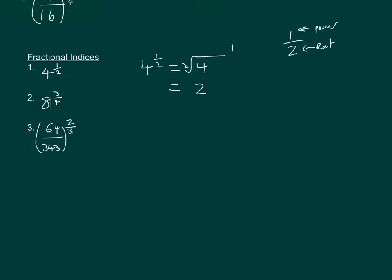To see how this works: if we take 4 to the power of 1 half times 4 to the power of 1 half, using our previous laws, half plus a half gives 4 to the power of 1. So we need the number which multiplies by itself to give us 4, and that's root 4 times root 4.